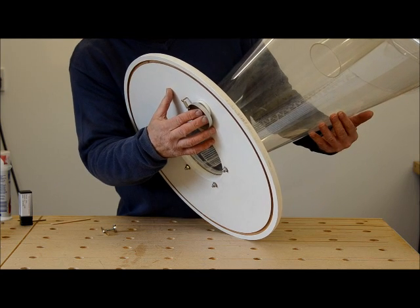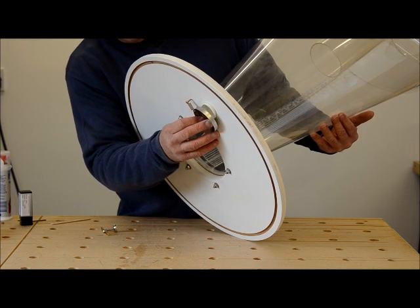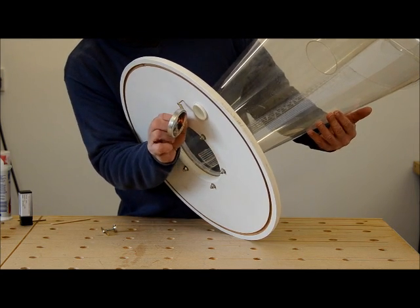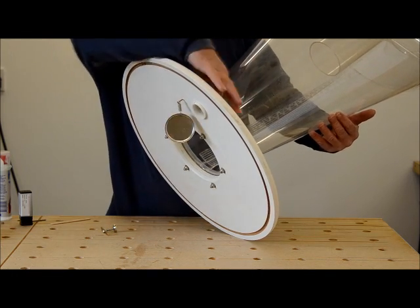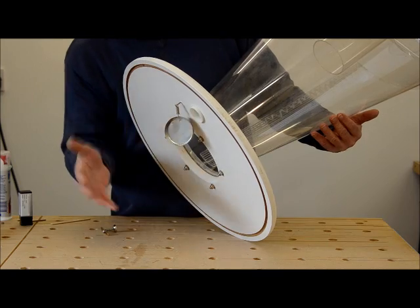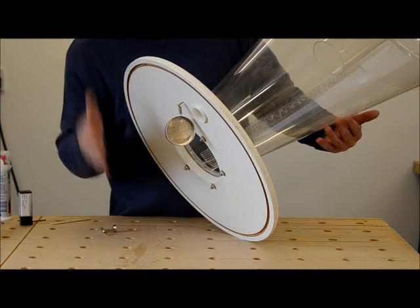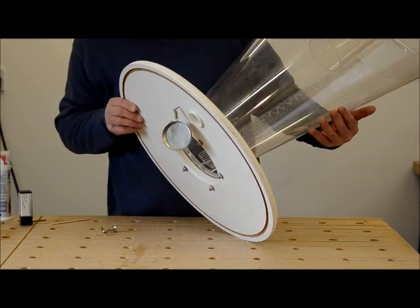But if the suction inside the whole mechanism becomes so great that it would risk crushing the cyclone, then that suction causes this tin lid to be sucked away from the hole. And then air can pass straight through the hole and relieve the vacuum inside. That way your cyclone is protected.